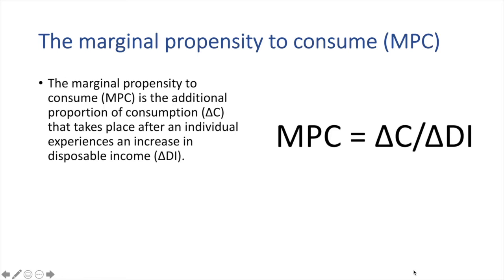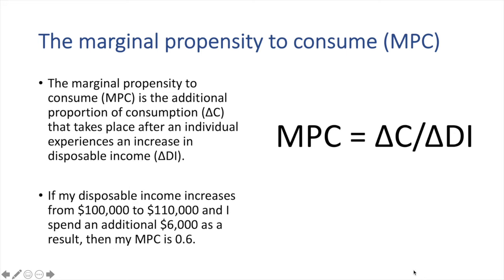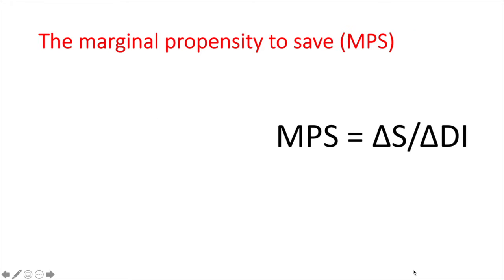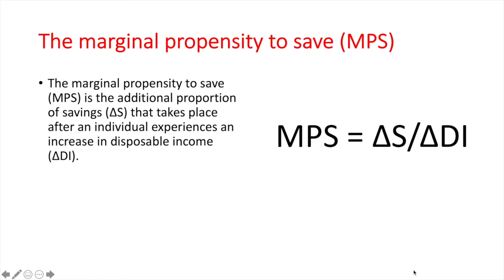The marginal propensity to consume is the additional proportion of consumption that takes place after an individual experiences an increase in disposable income. If my disposable income increases from $100,000 to $110,000 and I spend an additional $6,000 from that $10,000 increase, then my MPC is 0.6.